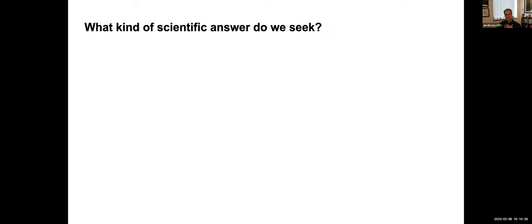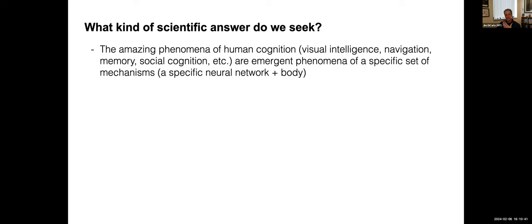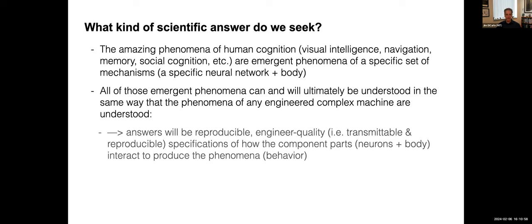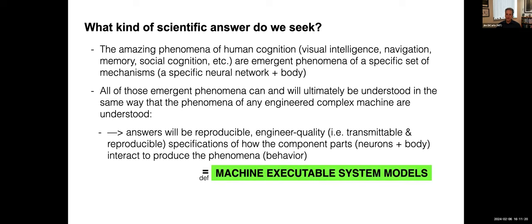Our goal as a field — brain and cognitive science broadly construed — is to find what I'll call systems models that link from neurons and their connections all the way up to complex behavior and cognition. Just to hammer home the philosophy: what kind of answers do we seek? We're not after theories like Maxwell-like equations. We're after something else — the emergent phenomena of human cognition are emergent from a specific set of mechanisms, a specific neural network interacting with the body. The answers will be reproducible, engineer-quality specifications of how the component parts — in this case, the neurons in the body — interact together to produce the emergent phenomena: interesting behavior and cognition, or in my case, visual intelligence.